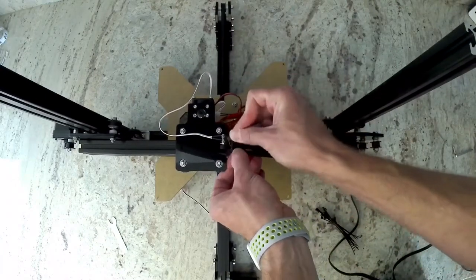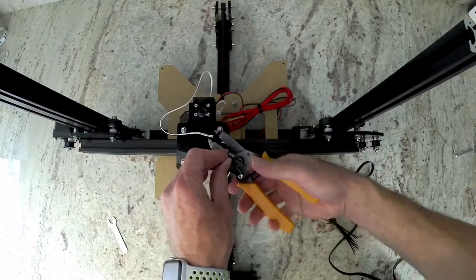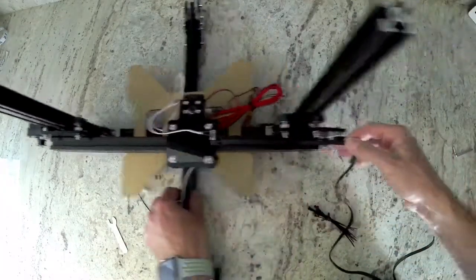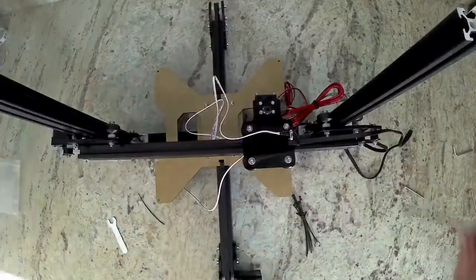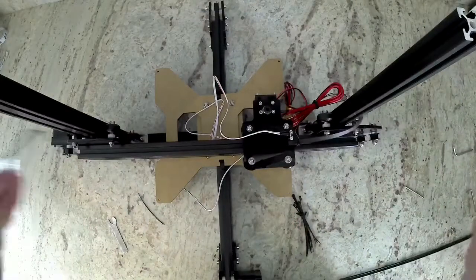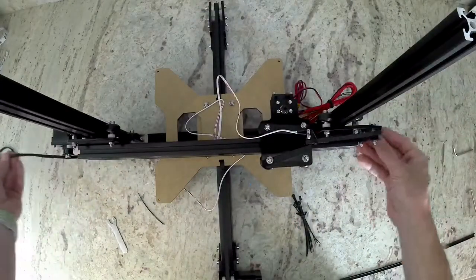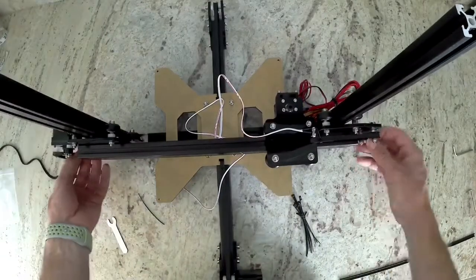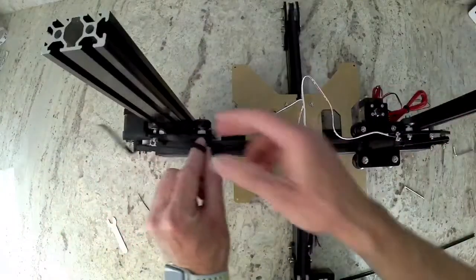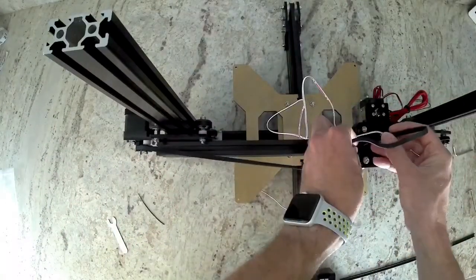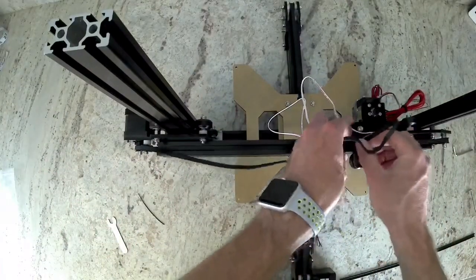We're going to loop the belt around the idlers. It's going to go through the center of the extrusion we just installed, back up around the gear for the motor, the idler, and then back to the x-carriage. If you have a hard time getting the belt through the center of the extrusion, you can use something like the slot covers in the very bottom of your kit.